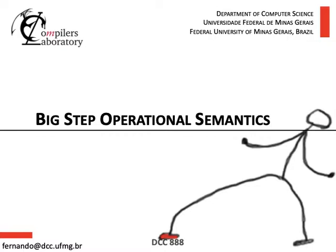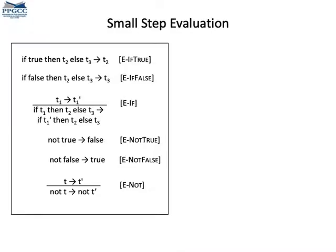We shall see a variation of operational semantics called big step semantics. In the previous class, we saw evaluation rules for a small language with booleans. Here they are, those rules. I've augmented the initial rules with two new rules to handle negation. That will help with examples.